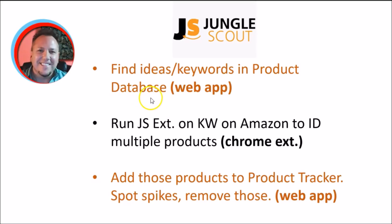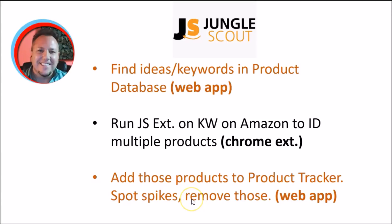To recap the workflow: find ideas and keywords in the Product Database in the web app, run the Jungle Scout extension in your Chrome browser on keywords while on the Amazon site to identify multiple products, then bring those products into the Product Tracker in the web app to spot anomalies and remove them as needed — so that you have a solid set of products from which to choose.